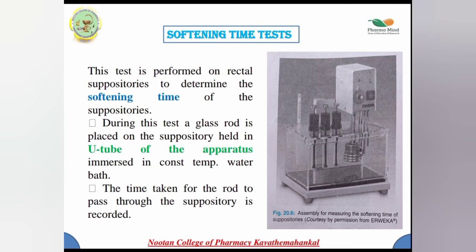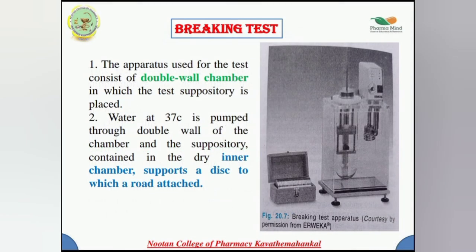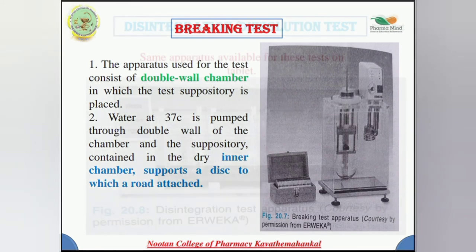The third method is the breaking test. Brittleness of suppositories is a problem for which various solutions have already been described. The breaking test is designed to measure the probability of brittleness. The apparatus consists of a double-wall chamber where water at 37°C is pumped through the walls while the suppository disc is contained in a dry inner chamber. A rod is attached to the disc, and at the other end weights are applied. The test is conducted by placing the suppository on the platform and adding 200-gram weights at one-minute intervals. The weight at which the suppository disc collapses is the breaking point, determining the brittleness characteristics.